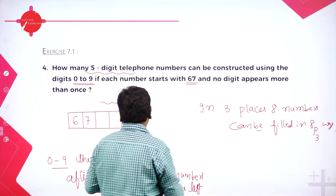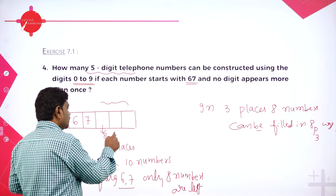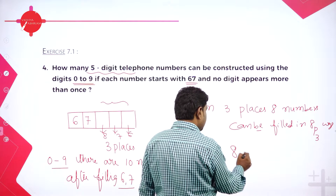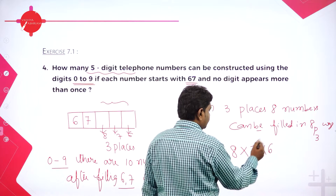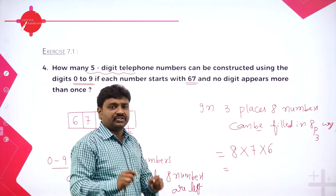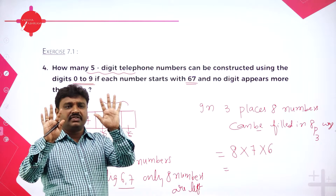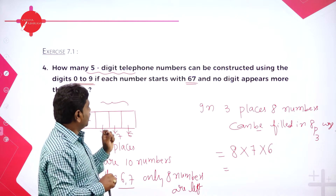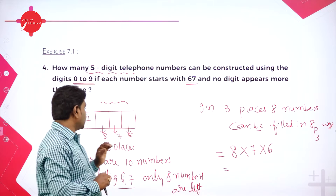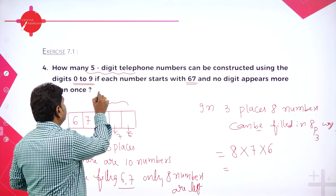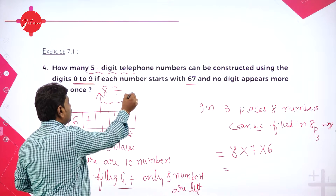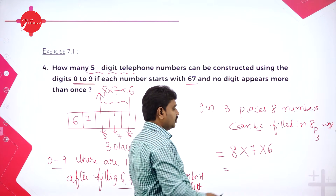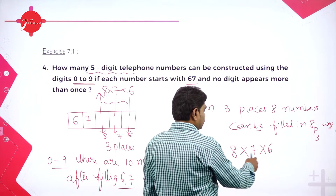By the fundamental principle: this box can be filled in 8 ways, the next in 7 ways, and the next in 6 ways. So the answer is 8P3. 8P3 means 8 into 7 into 6. From 0 to 9 there are 10 digits; remove 6 and 7, leaving 8 digits for 3 places. Without repeating, the first box is 8 ways, second 7 ways, third 6 ways — that is 8P3.